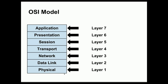Of all these layers, the physical layer is the only one that strictly requires hardware. The remaining layers of the OSI model can be implemented entirely in software. As a footnote, we can implement entire virtual networking systems that exist entirely in software and have a virtualized physical layer, but that's beyond the scope of our discussion today.